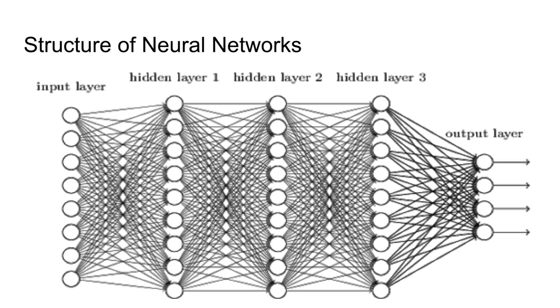The amount of hidden layers depends on the complexity of the neural network. Some neural networks that are not super complex might have one to two hidden layers, while other very complex neural networks can have multiple — even tens and hundreds of hidden layers.